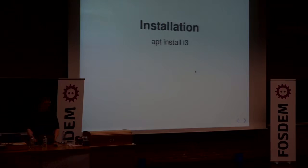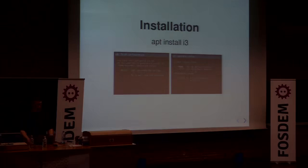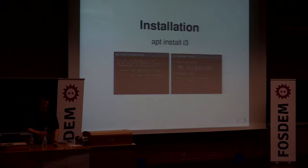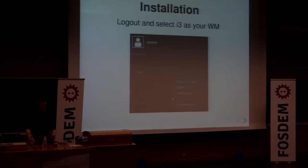How do you install it? Well, you install the package. On first launch, it generates your configuration with all the default bindings and asks you for the mod key you want to use. The mod key is a very important aspect of i3 — it gives you the shortcuts you'll use to control i3. Usually you want to use the Windows key. Then you log out and select i3 as your window manager.